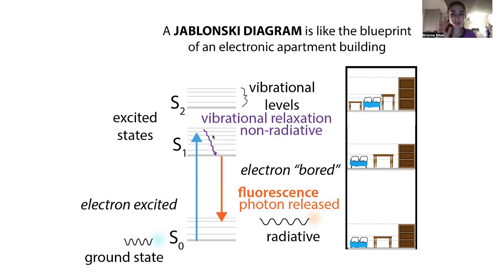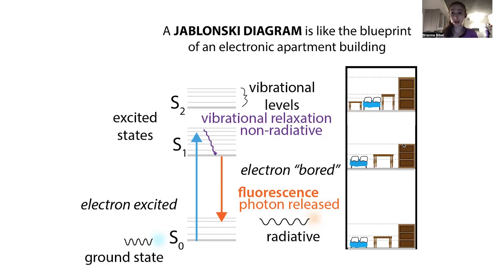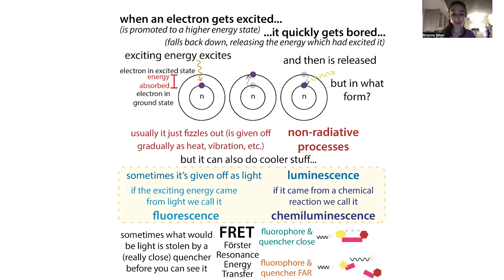There are vibrational levels between the main energy floors — kind of like being on a bed versus standing on a cabinet. Electrons can absorb or release a little energy and move between these vibrational levels. But to actually go up to another energy level, they have to absorb a specific unit of energy, which can be provided in various ways — for example, by light, as is the case with fluorescence.